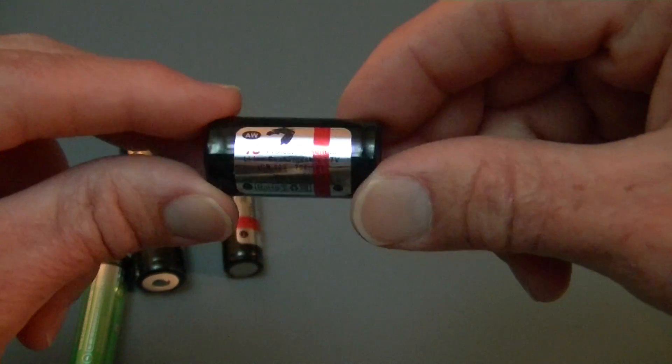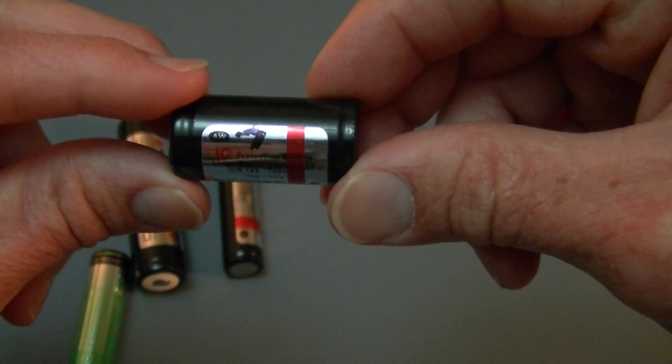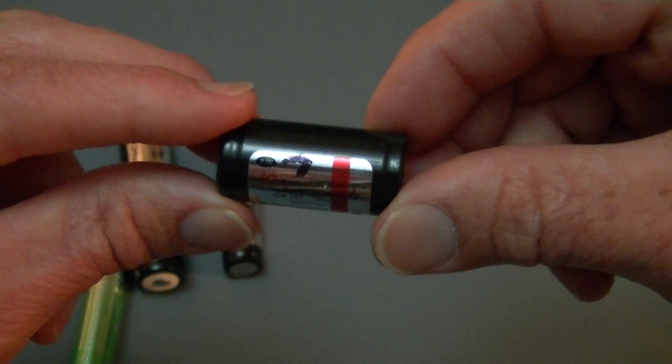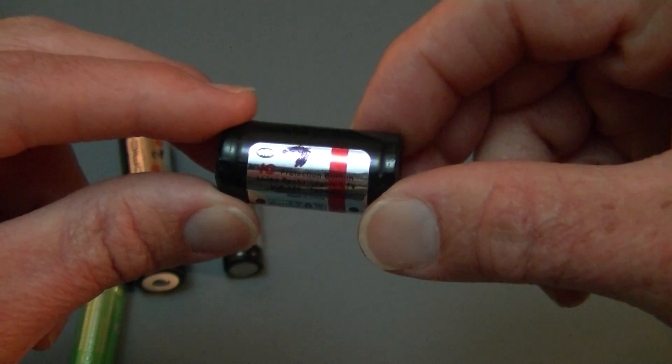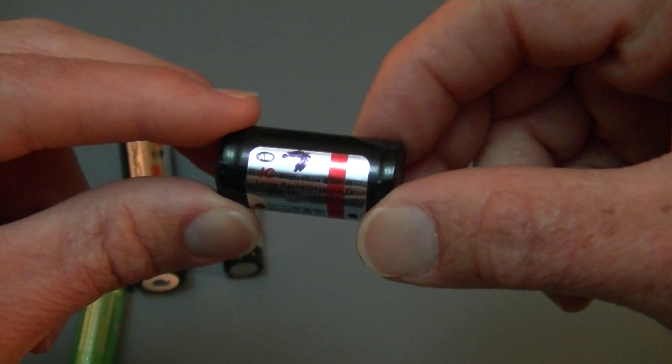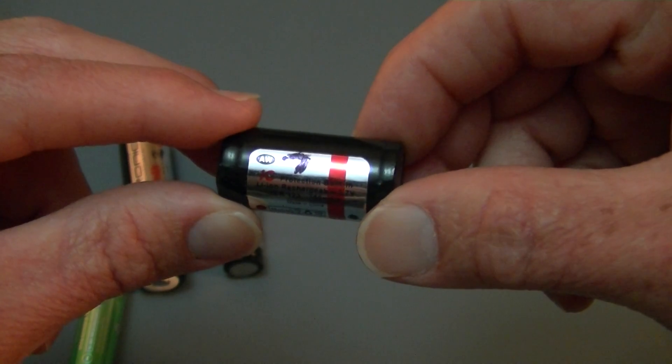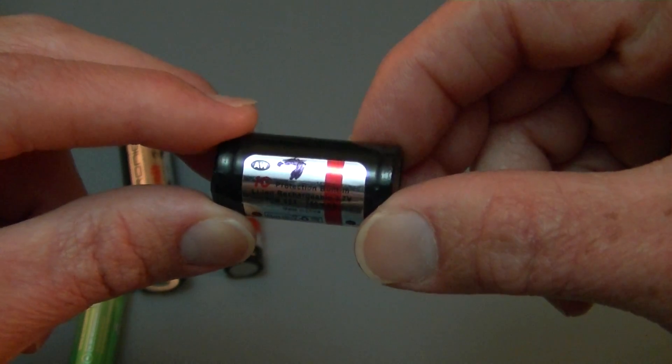And then you have the 16340s which are like the CR123 camera batteries but these are the rechargeable variety. The 16340 these are the rechargeable variety also known as RCR123. CR123 is the disposable variety.